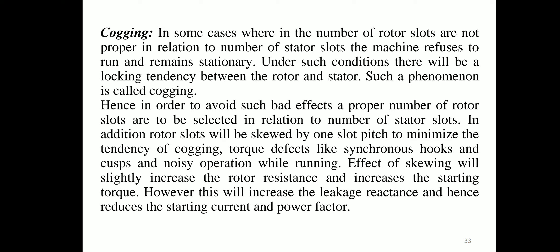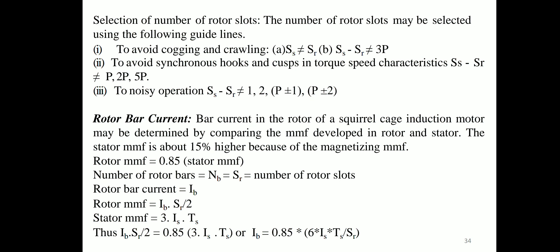Skewing slightly increases the rotor resistance and increases starting torque, but also increases leakage reactance, reducing starting current and power factor. Guidelines for selecting rotor slot numbers: (a) To avoid cogging and crawling: Ss ≠ Sr, and (Ss − Sr) ≠ 3p. (b) To avoid synchronous hooks and cusps: (Ss − Sr) ≠ p, 2p, or 5p. (c) To avoid noisy operation: (Ss − Sr) ≠ 1, (p ± 1), or (p ± 2).